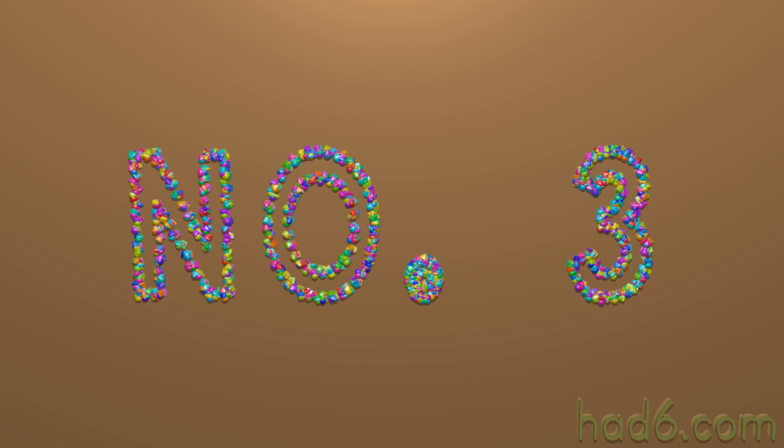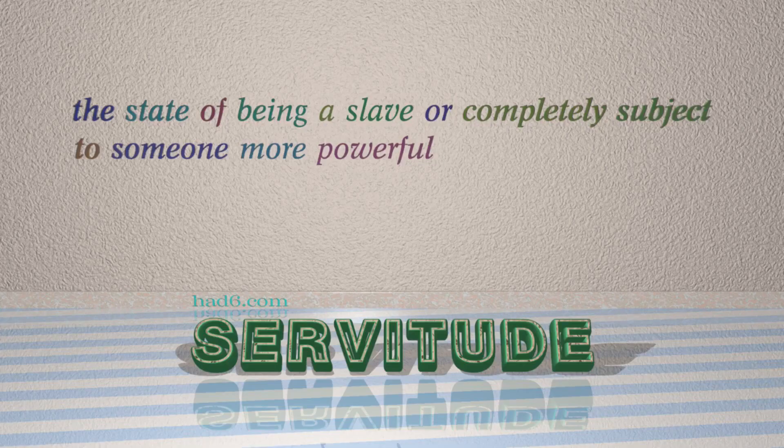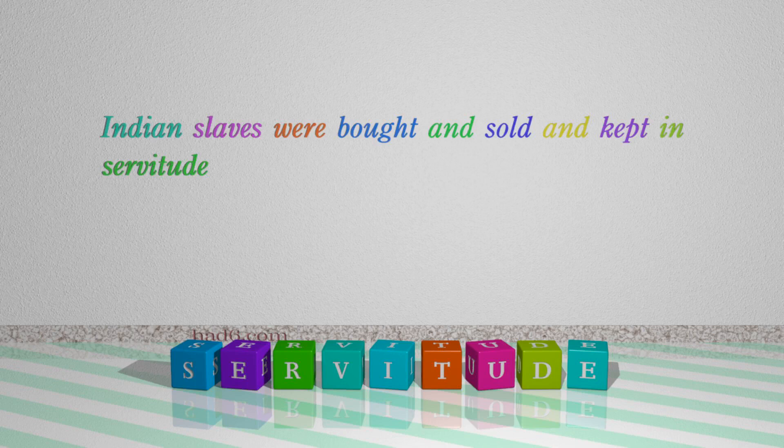Number 3: Servitude — which means the state of being a slave or completely subject to someone more powerful. For example: Indian slaves were bought and sold and kept in servitude.